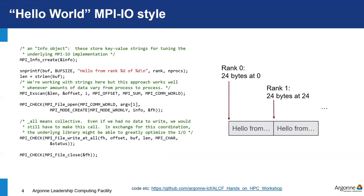This is a hands-on talk. You can check out code on GitHub and submit jobs to the queue on Polaris. All the materials were uploaded this morning — just refresh your GitHub checkout. You'll find them in the visualization, IO, MPI-IO, and HDF5 directory, with subdirectories containing code examples, excerpts shown on screen, and job submission scripts.